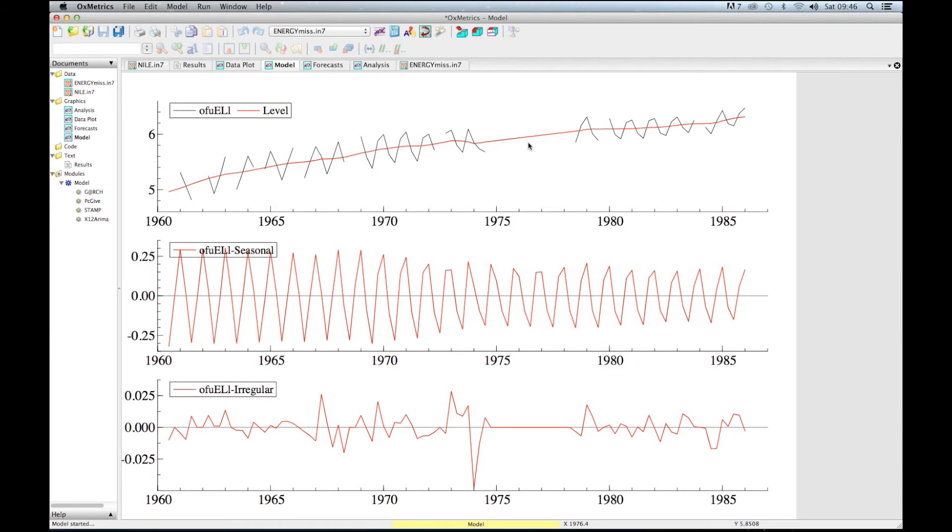The irregular is also estimated, but of course when the data is not available from 1970 up to 1982, there is no irregular—all these irregulars are zero because basically we have no noise in the data. It is missing.